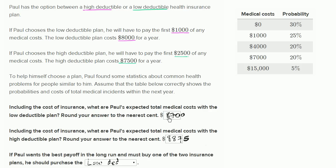You shouldn't use these videos as insurance advice, but it's an interesting way to think about it. It's not always the case that the low deductible plan is the better deal — I won't make any actuarial statements. But at least in this situation, the low deductible plan seems like the better deal, since Paul has lower expected total costs given these probabilities.